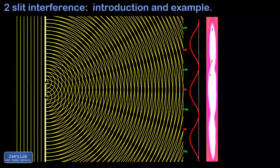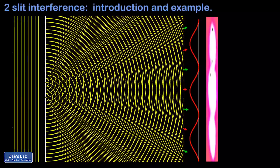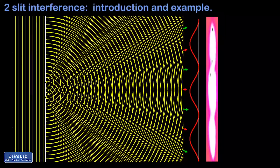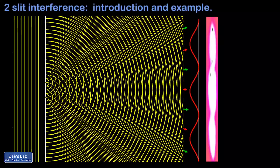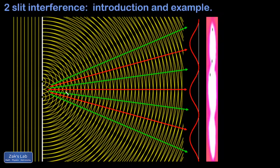Along some lines of sight we have crests overlapping crests, troughs overlapping troughs — these are the directions of constructive interference between the two sources. In between these, we have troughs overlapping crests, which are the directions of destructive interference. Along the red lines we have crests and troughs landing on top of each other, reinforcing constructively. Along the green lines, crests are lined up right on top of troughs from the other wave, so those waves interfere destructively.